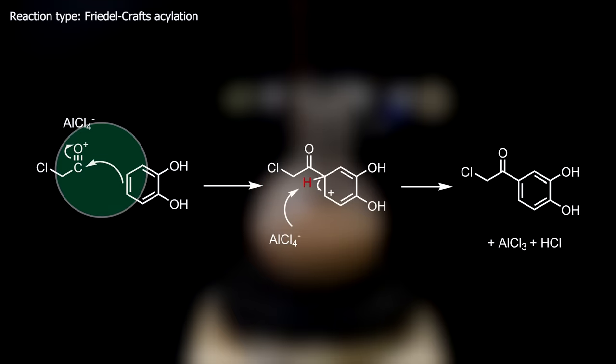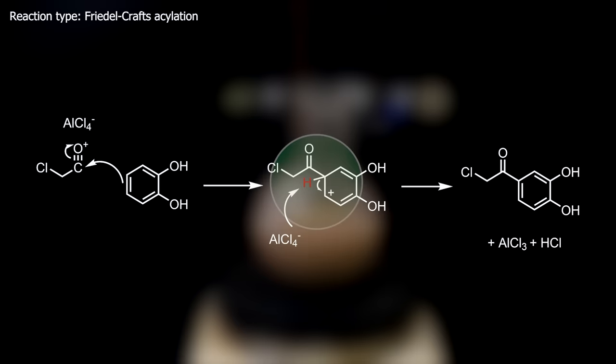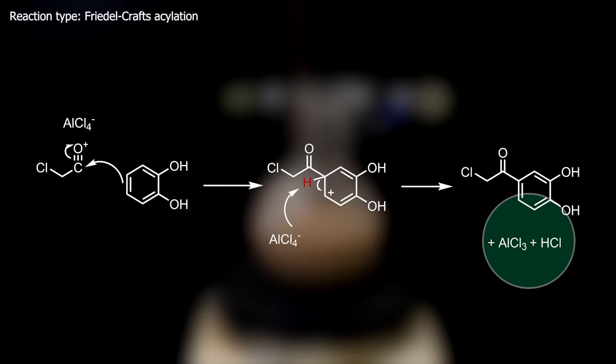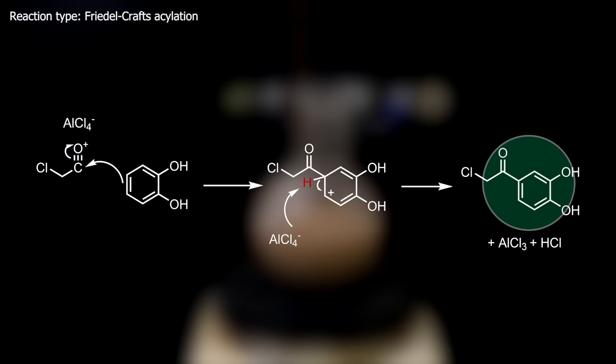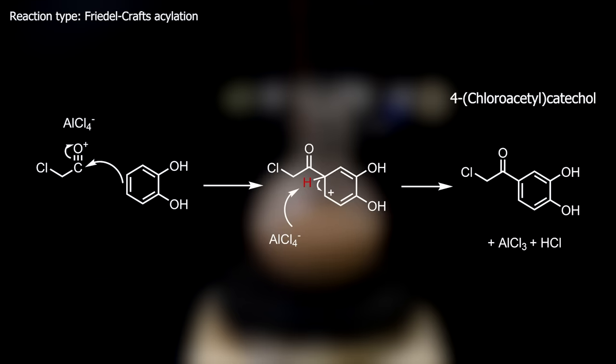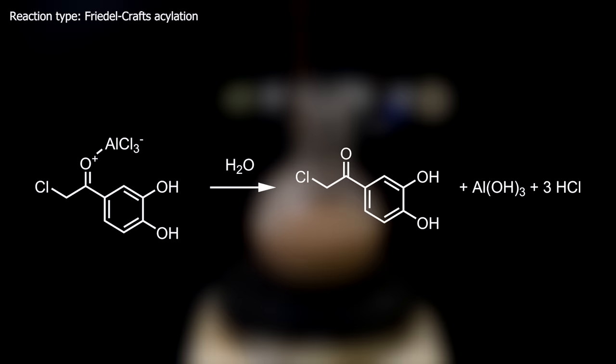This intermediate is deprotonated by the tetrachloroaluminate ion to form hydrogen chloride, restore the aluminum chloride catalyst, and the aromatic ring. We are then left with the final product, 4-chloroacetyl catechol, or also called 2-chloro-3',4'-dihydroxyacetophenone. The product can also form a complex with aluminum chloride which can be destroyed afterward by adding water.